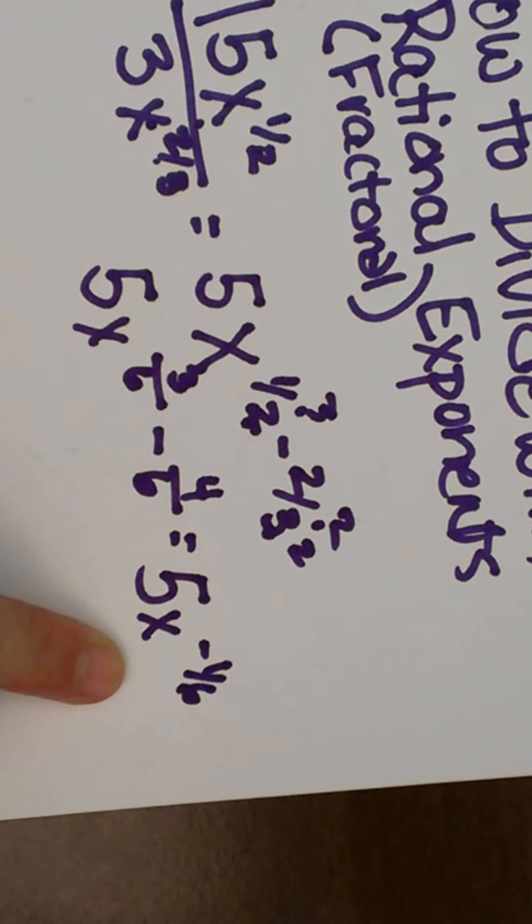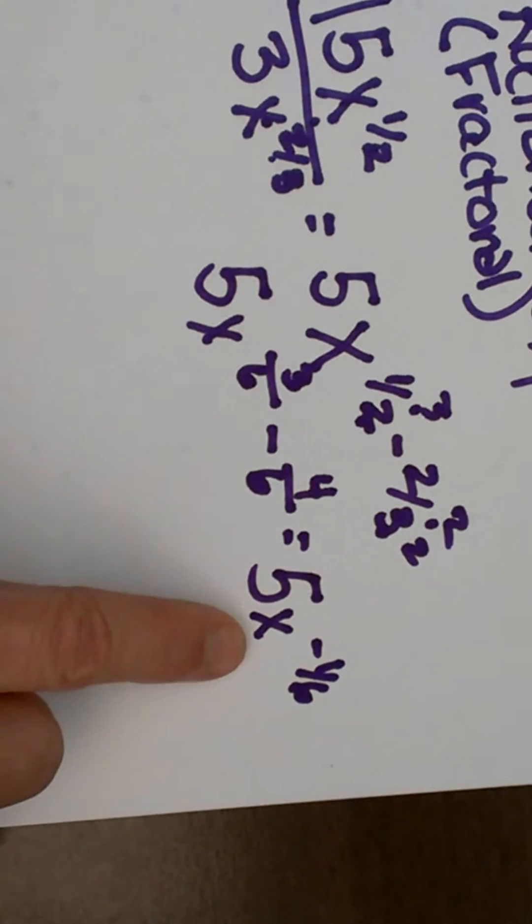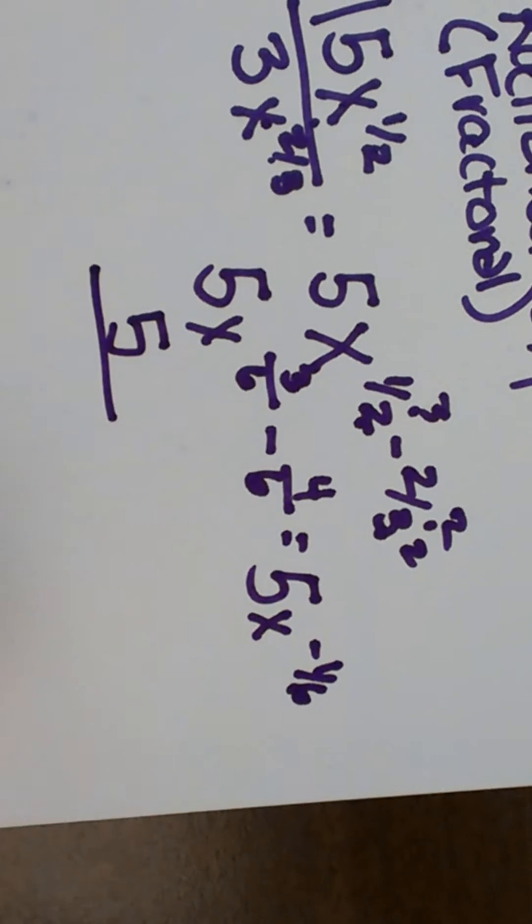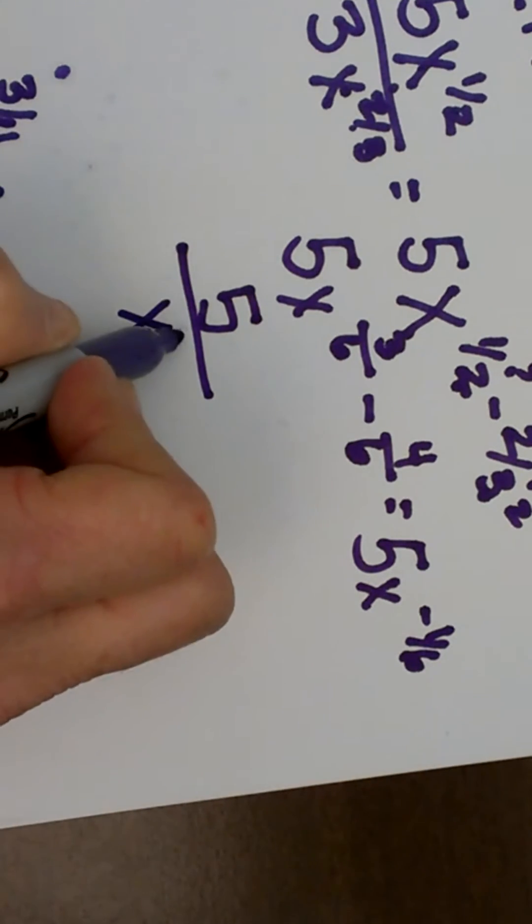Now what that is telling me is that the exponent is in the wrong position. It has to go down to the bottom of the fraction. So I am going to write this as 5 over x to the 1/6.